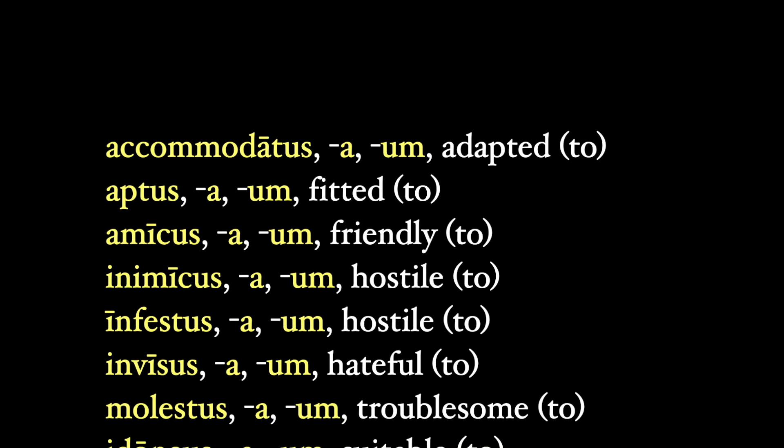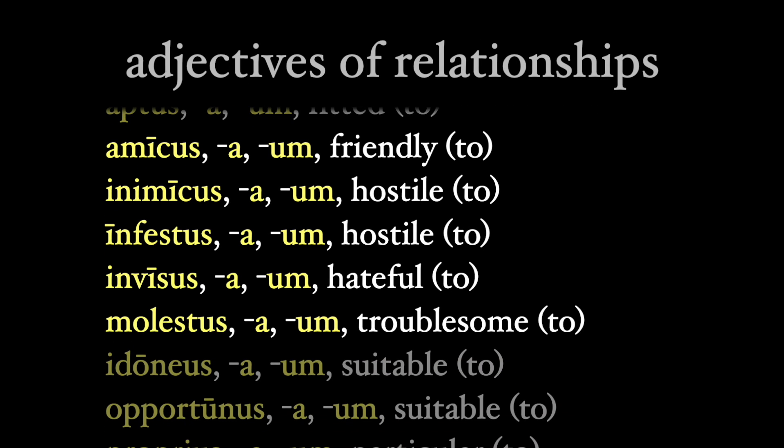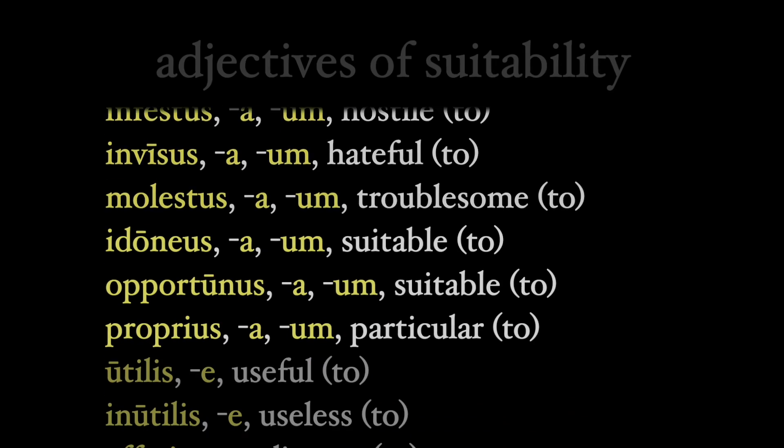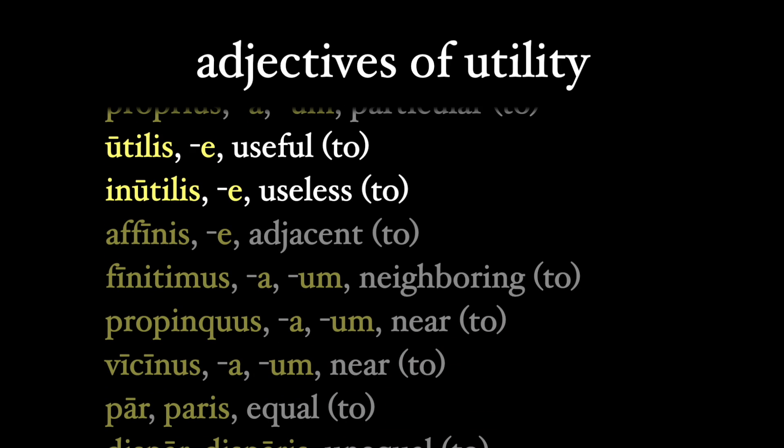I'll be upfront with you on this one. We're dealing primarily, but not exclusively, with adjectives like these. Ones related to fitness, like accommodatus and aptus, and these touch upon relationships: amicus, inimicus, infestus, invisus, and molestus. These are adjectives of suitability: idoneus, opportunus, and proprius. These are adjectives of utility: utilis and inutilis.